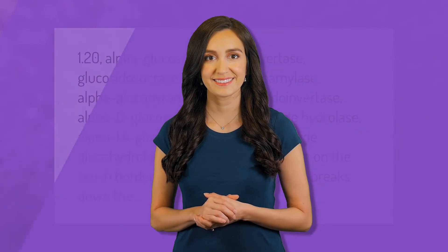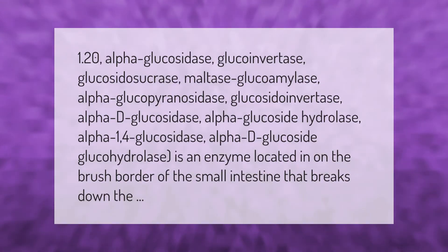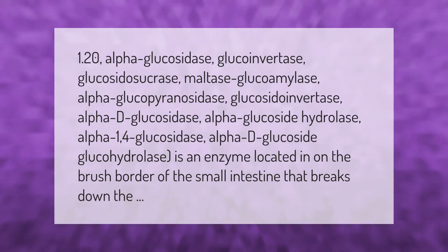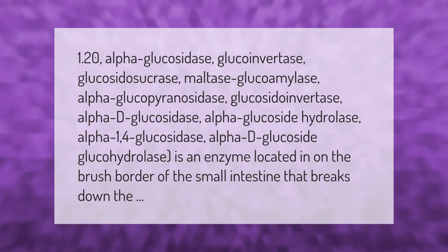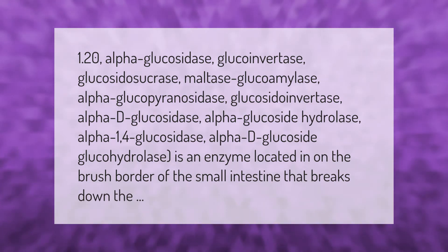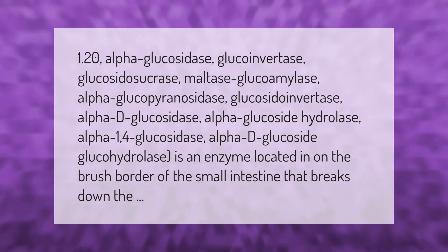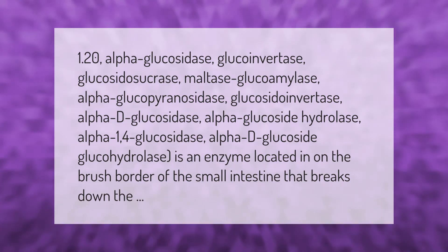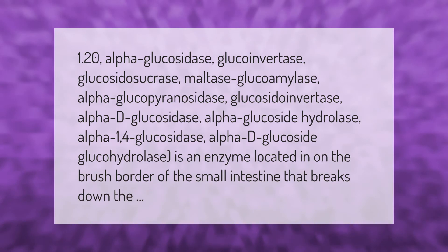Maltase-glucoamylase is also known by several names: alpha-glucosidase, glucoinvertase, glucocyclozucrase, alpha-glucoporanosidase, glucocycloinvertase, alpha-D-glucosidase, alpha-glucoside hydrolase, alpha-1,4-glucosidase, and alpha-D-glucoside glucohydrolase. It is an enzyme located on the brush border of the small intestine that breaks down sugars.